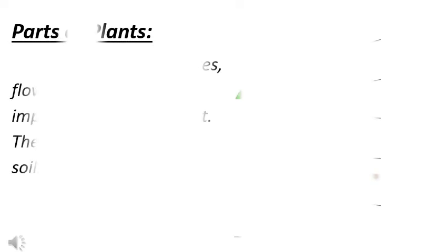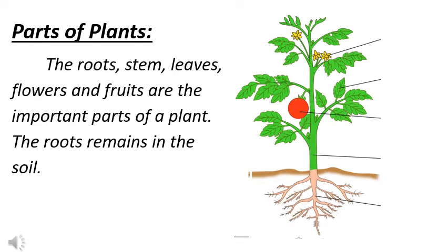Now, we will discuss the parts of plants. Dear children, do you know what are the parts of a plant? The roots, stem, leaves, flowers, and fruits are the important parts of a plant. Remember, the parts of a plant are flower, leaves, fruit, stem, and roots.